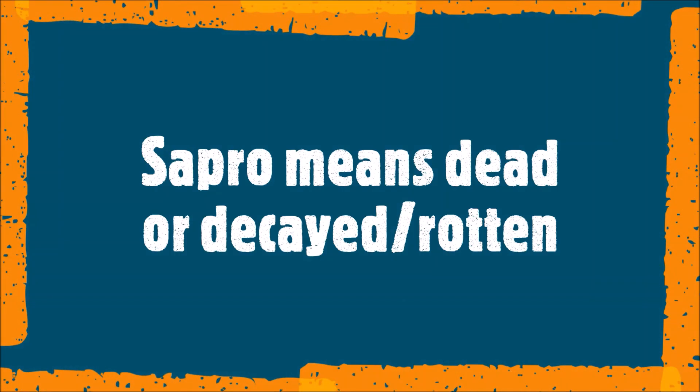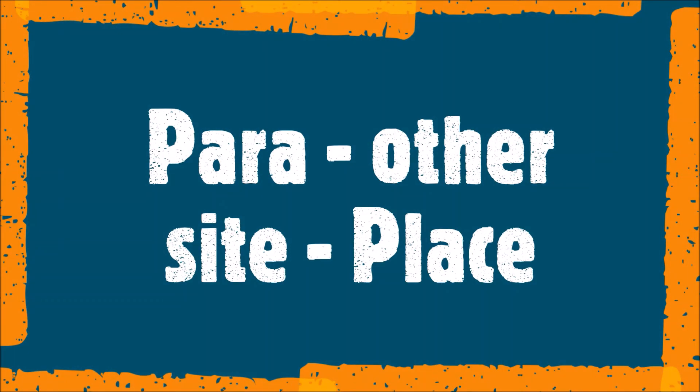Saprotrophs: sapro means dead or decayed organic matter and trophe is nutrition. Examples are certain fungi and bacteria. Parasitic mode of nutrition: para means other and site means place. Organisms that live on a host body and obtain food from the host for their existence are called parasites. Examples include certain fungi like Puccinia, bacteria, certain plants like Cuscuta, and animals like Plasmodium, roundworms, and leeches.